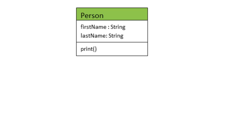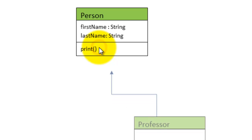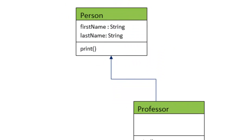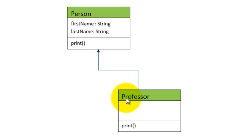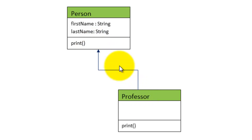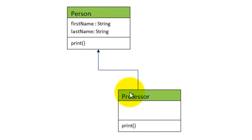We have a class called Person and it has two attributes, or states, called first name and last name. It also has the behavior of printing that particular person. We have a subclass called Professor, and Professor also has the behavior of print. Professor is a person — in this case Professor inherits the state from Person, which is first name and last name.